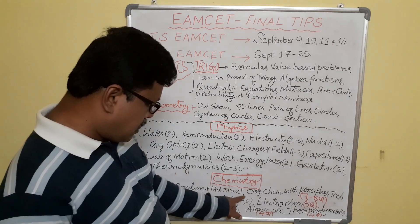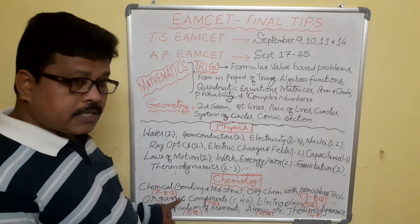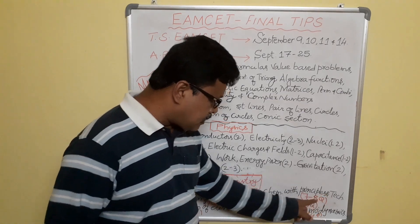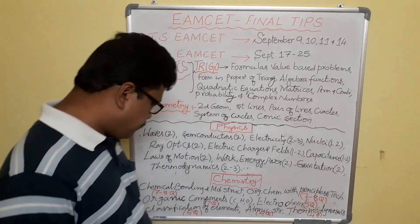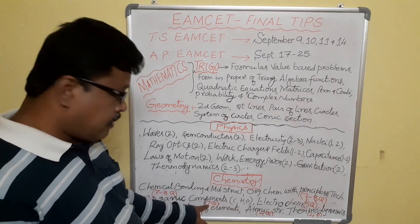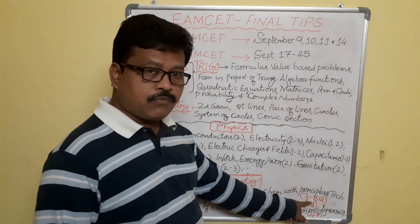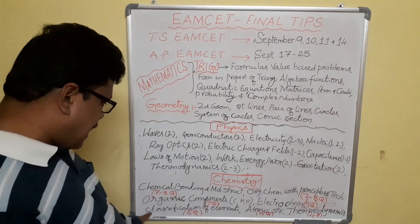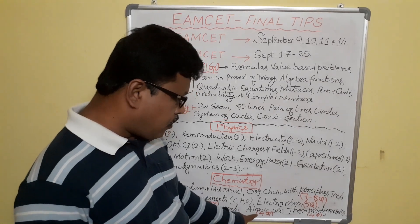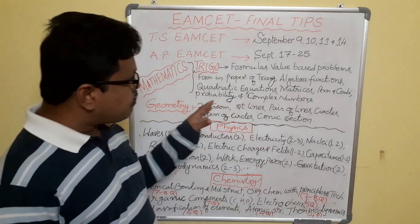Now chemistry: chemical bonding and molecular structure — 7 to 8 questions, this is very important. Organic chemistry with principles and techniques — 7 to 8 questions. Organic compounds with CHO — 7 questions. Electrochemistry — 5 questions. Classification of elements — 5 questions. Atomic structure — 4 questions, and thermodynamics — 4 questions. These are very important.